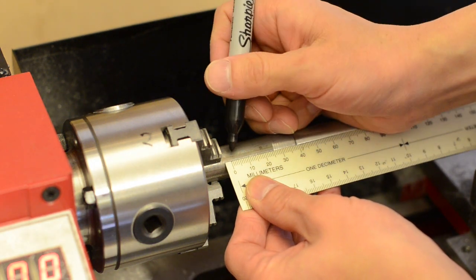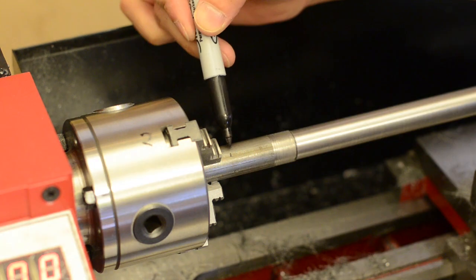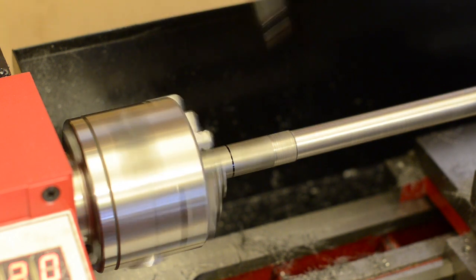I'm marking 40mm in and this is the section that will press fit into the square block.